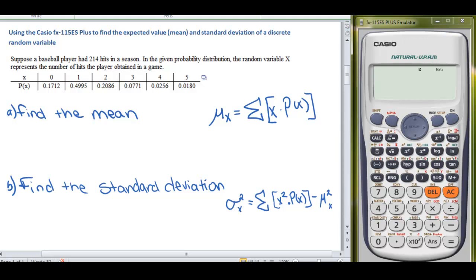So we have a problem. Suppose a baseball player had 214 hits in a season. In the given probability distribution, the random variable x represents the number of hits the player obtained in a game.